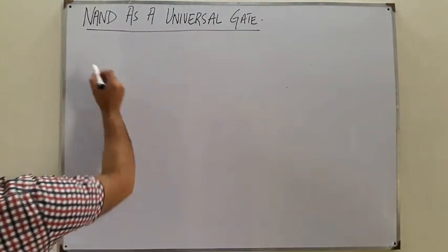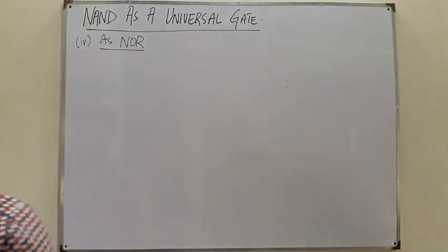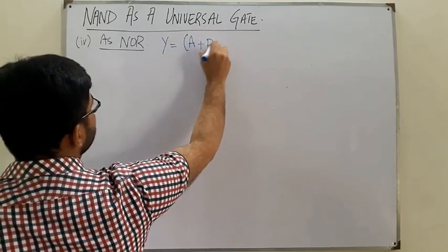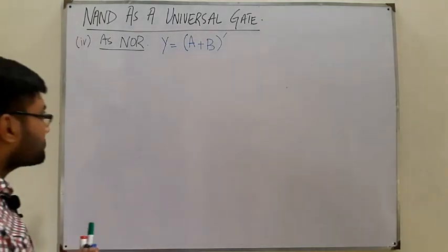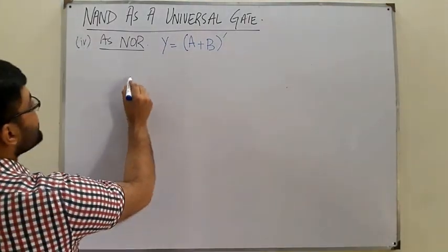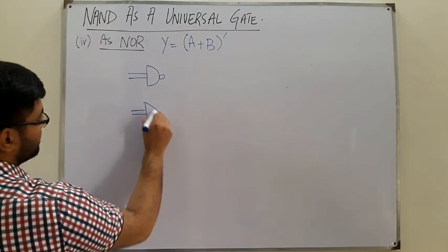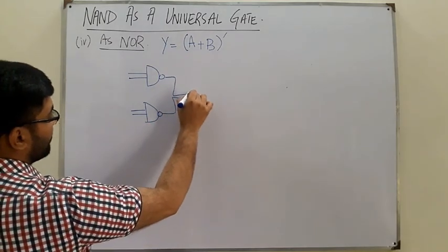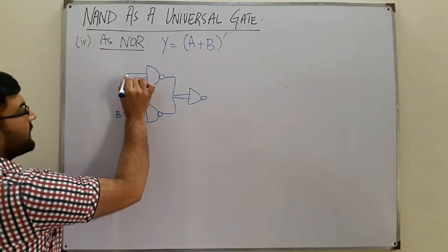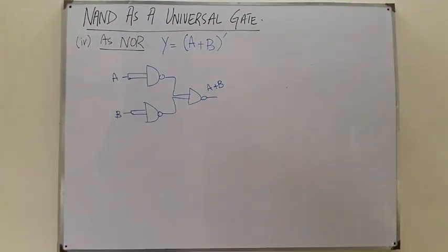Next, the NAND gate used as a NOR gate. The NOR operator function is Y = (A OR B) complement — it ORs the inputs and then complements the result. To build a NOR from NAND gates, we first build the OR operation using the three NAND gates we just described, giving us A OR B at that stage.